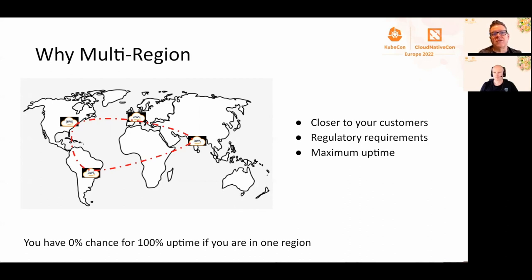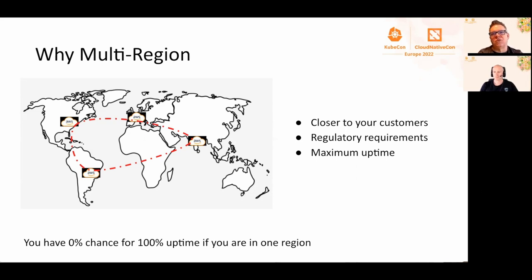There are also regulatory requirements to manage. Every sovereign data protection law has different rules - in Europe, North America, Australia - and they're always changing, with requirements on privacy and things like that. And then there's maximum uptime. You have a 0% chance of 100% uptime if you're only in one region. One region can fail, and if you do a quick Google on cloud failures, you can see this happens quite often.